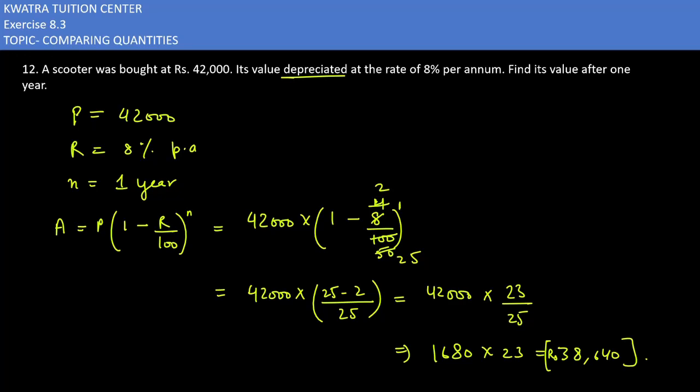After 1 year, what does it mean? N would be 1 year in this case. And then what you can do is you can put in the values. The only difference was that we used the formula P(1 minus R over 100). Why would we have to minus the value? Because the value decreases. Minus was necessary because the value of depreciation means that it will decrease. So we have to keep in mind that the formula will change if we say that it will be minus sign.